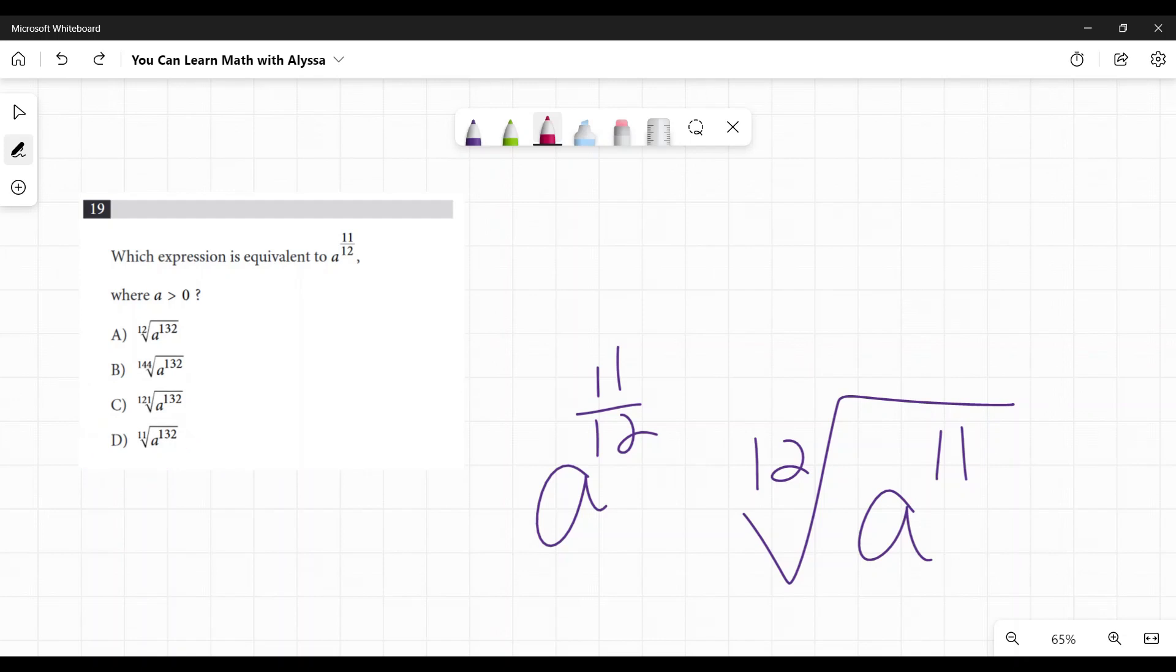Well, right off the bat, I'm going to eliminate A and D. Because as you can see in these two, both the base and both the root, excuse me, and the exponent were changed. However, in these two, well, this one, you've got the 11 outside, which I'm just like, no, there's no way that 11 is going to be the root because I know it's going to be related to 12. And this one, we have that 12th root, but the exponent 132 does not match 11. So already I'm like, okay, these are out.